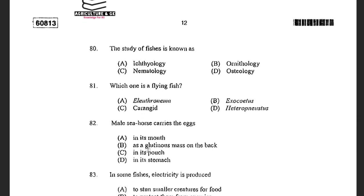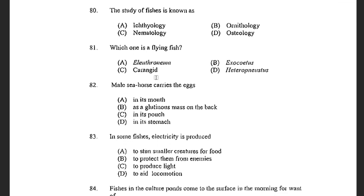Next question: The study of fish is known as — options are Ichthyology, Ornithology, Nematology, and Osteology. The answer is Ichthyology. Ornithology includes the study of birds, Nematology includes the study of nematodes, and Osteology includes the study of bones. Next question: Which one is a flying fish? Options are Eleutheronema, Exocoetus, Carangid, and Heteropneustes. The answer is Exocoetus. Exocoetus is also known as flying fish.